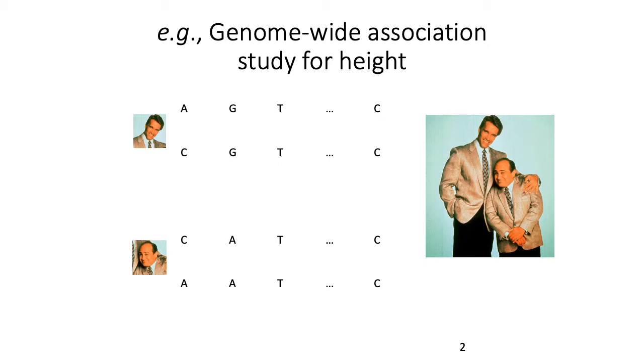The basic idea of an association study for continuous traits is that for humans, most humans are diploid. For each given SNP in the human genome, most SNPs are biallelic, so for any given position you should see at most two different alleles. Here's an example where columns represent different SNPs and rows represent different chromosomes for two different individuals.